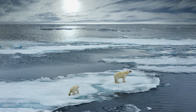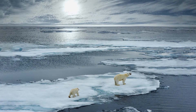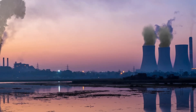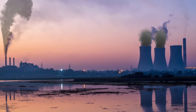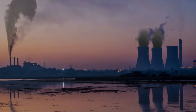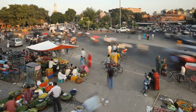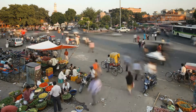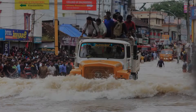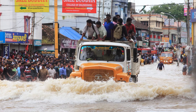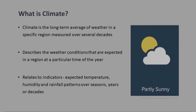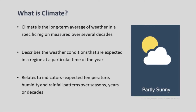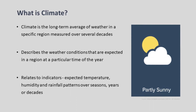Over the past few decades, global climate is changing rapidly and human activities are being attributed as the primary reasons for it. In India, where one in every seventh person on the planet lives, almost a million people are at risk from the impacts of climate change. But first, we need to understand what climate really is.